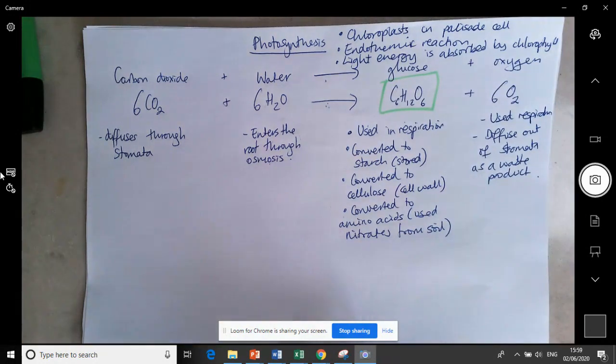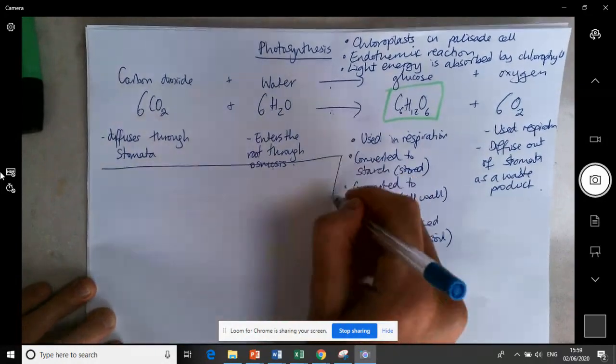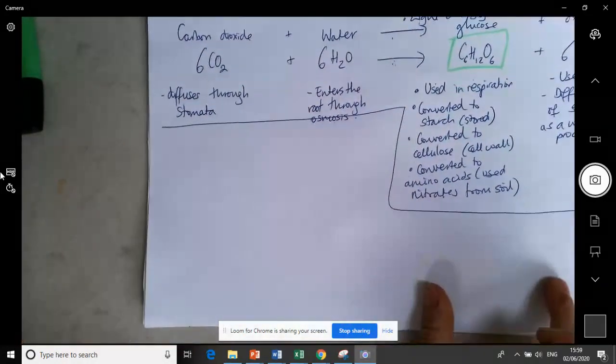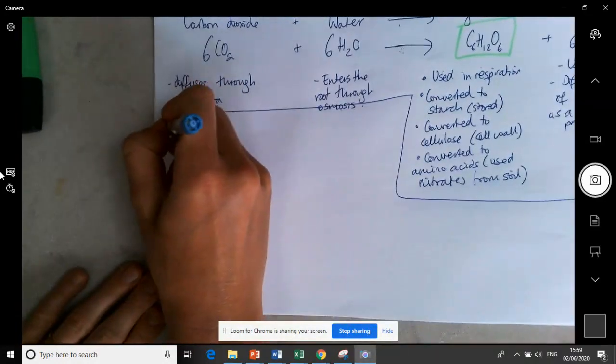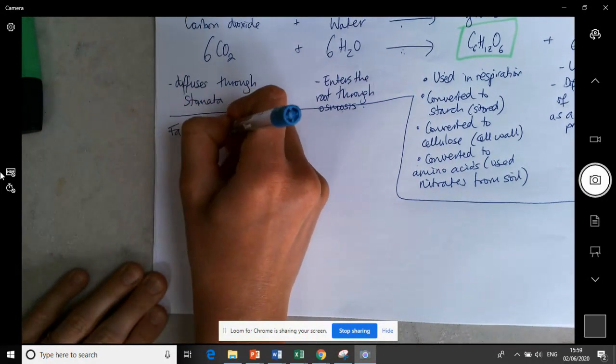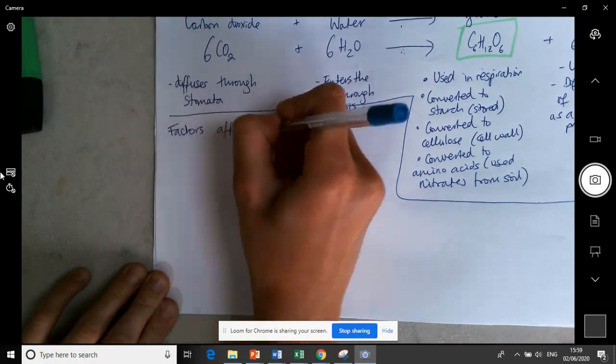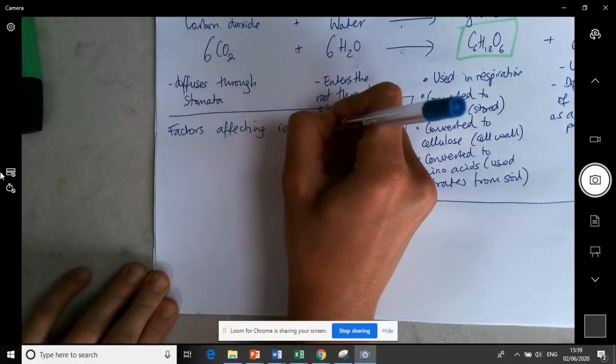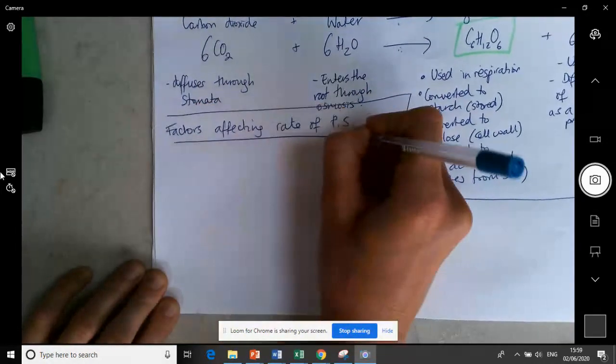So that's the key facts about photosynthesis. There's one more thing that you have to know which is about the rates of photosynthesis and the factors affecting those rates. I'm just going to put PS for photosynthesis.